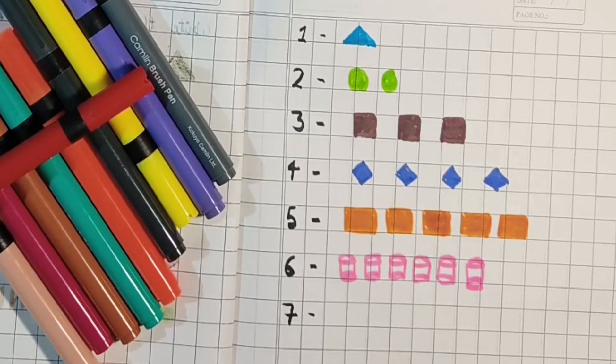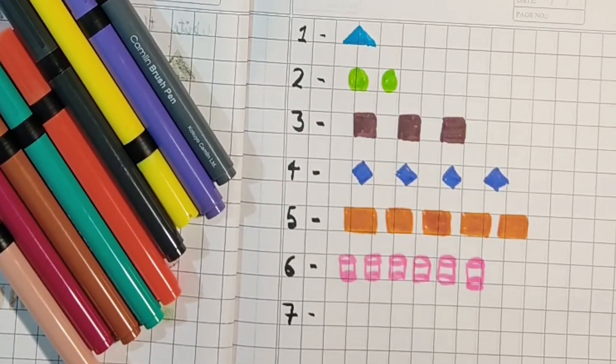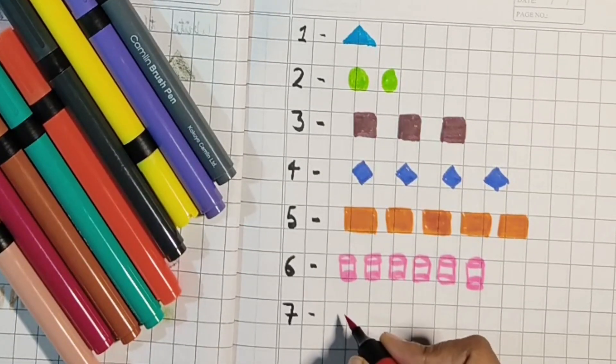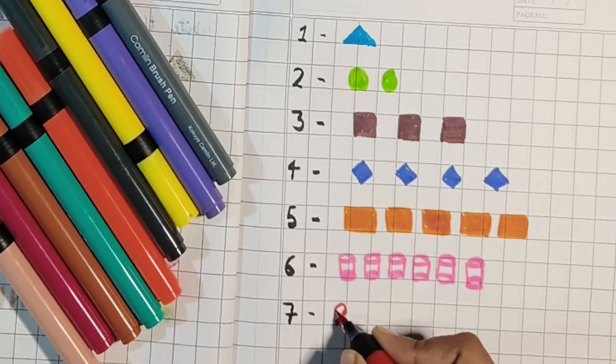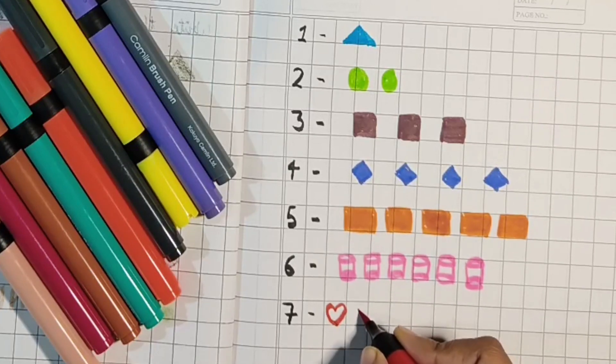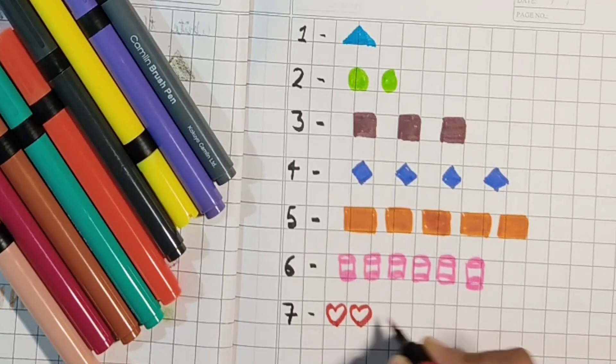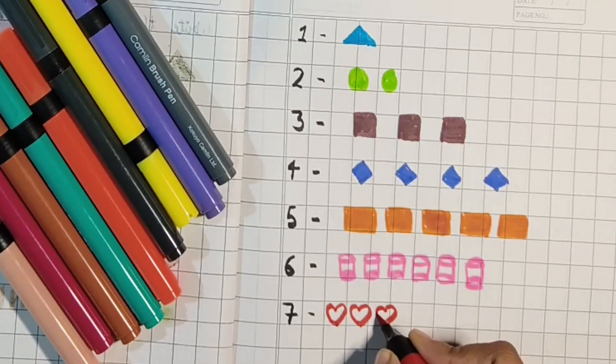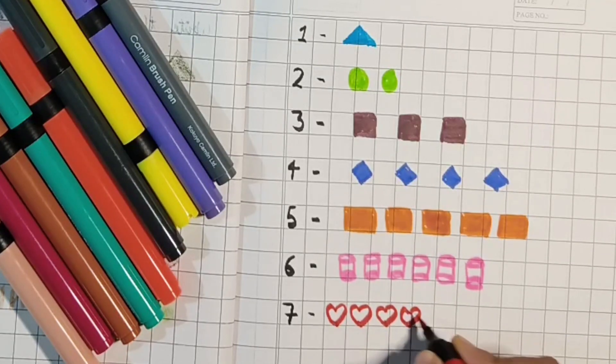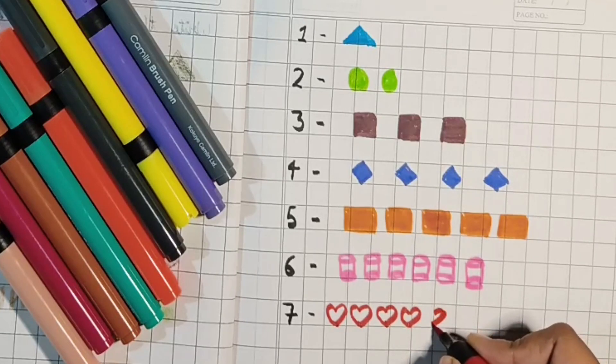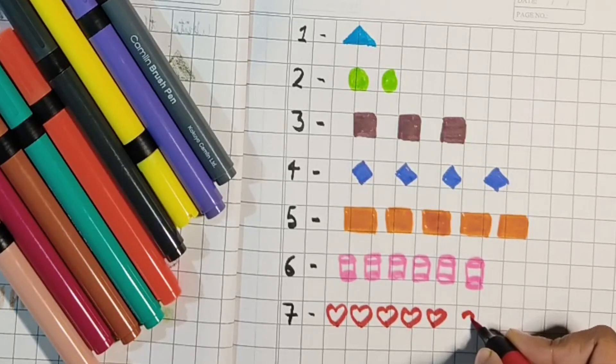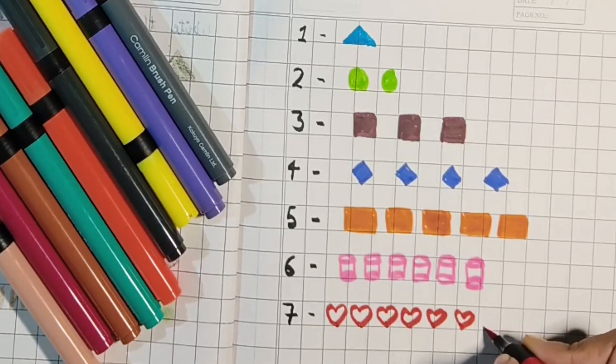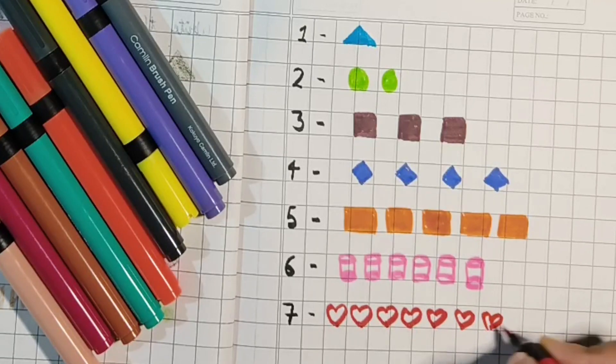Next is seven. So in seven, I will make seven hearts. Like this, I will make seven hearts. One, two, three, four, five, six, and seven.